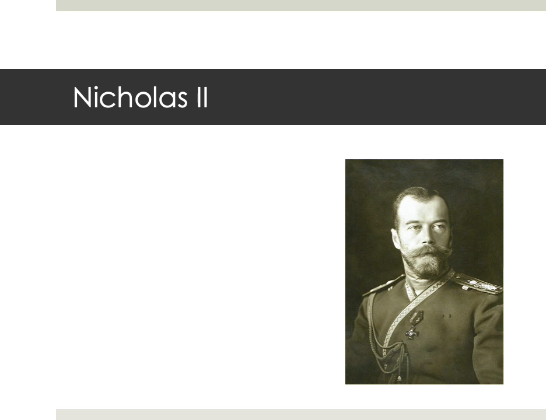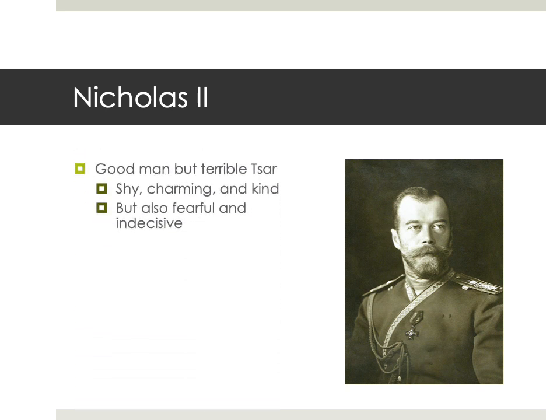In 1894, Alexander III died from kidney failure and was followed on the throne by his eldest son, Tsar Nicholas II. Nicholas attempted to continue the autocratic policies of his father with only very limited reforms. Unfortunately, Nicholas really lacked the personality and the force of will needed to rule successfully as an autocrat. He was what you might call a good man, but unfortunately a terrible Tsar. He was shy, charming, and kind, very generous — people really liked him, and he really cared about the Russian people. He was also, unfortunately, fearful and indecisive.